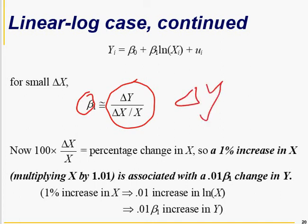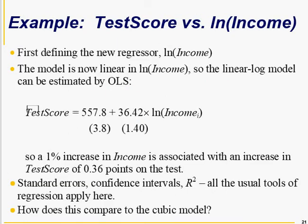A one percent increase in X is associated with a 0.01 times beta 1 change in Y. For example, we take log of income, so it means that if income is changed by one percent, there will be an increase in test score by 0.642 units.